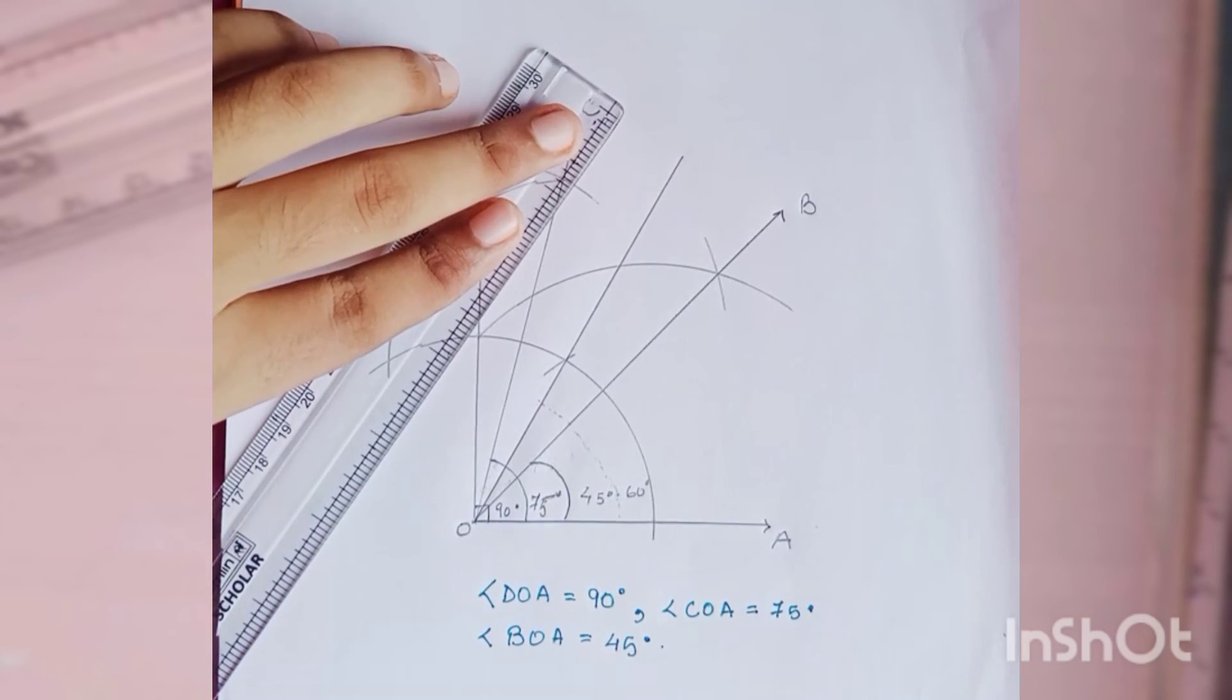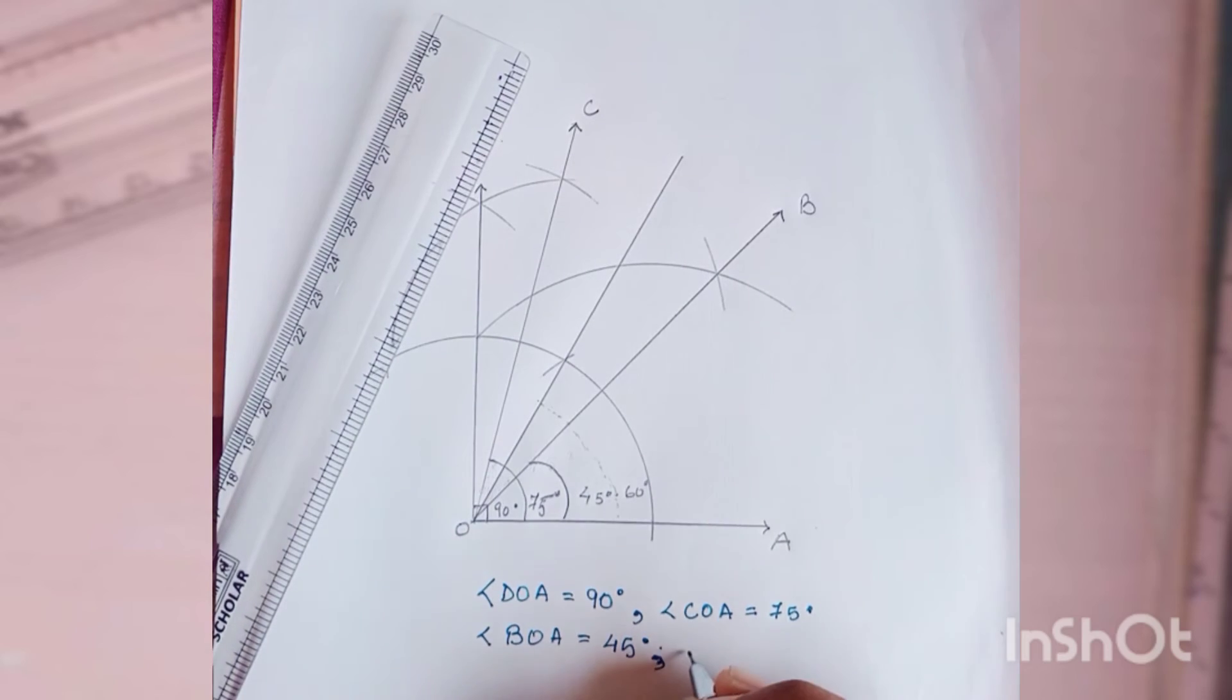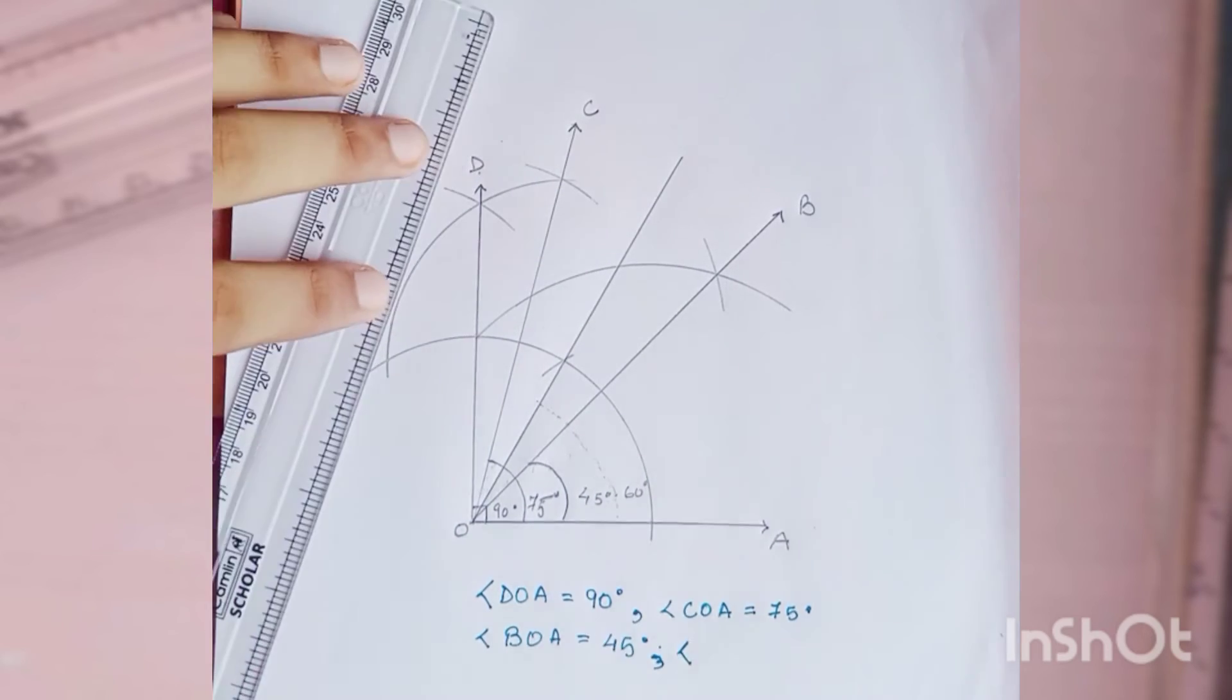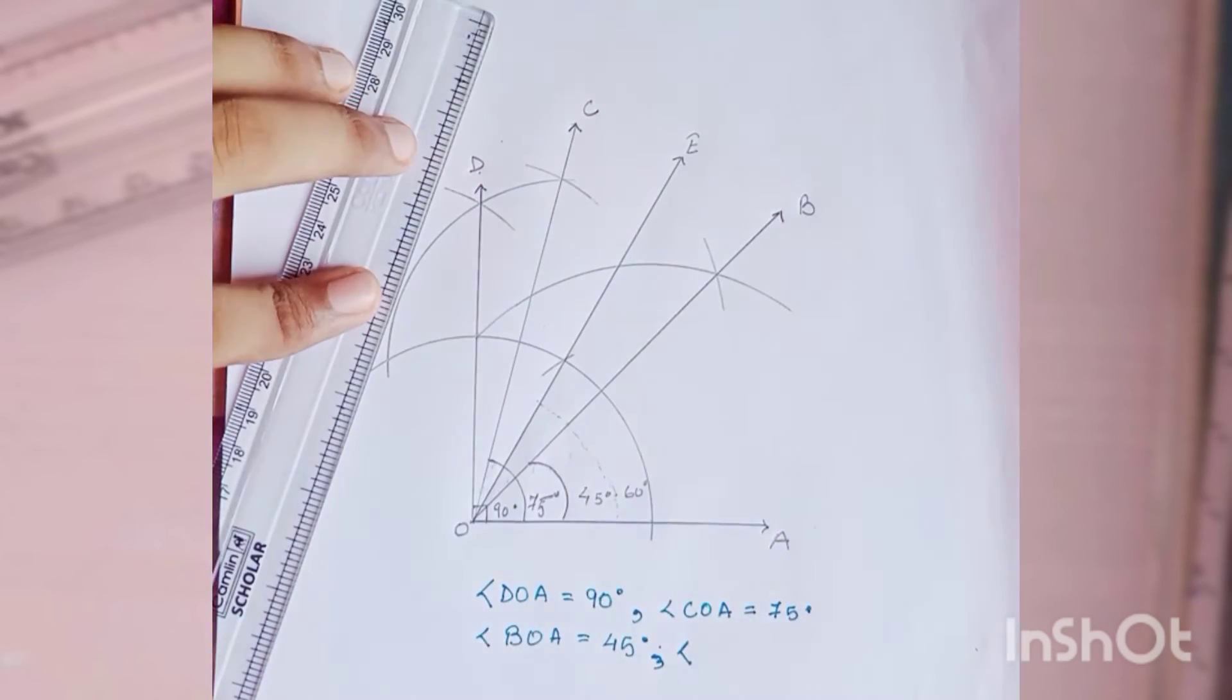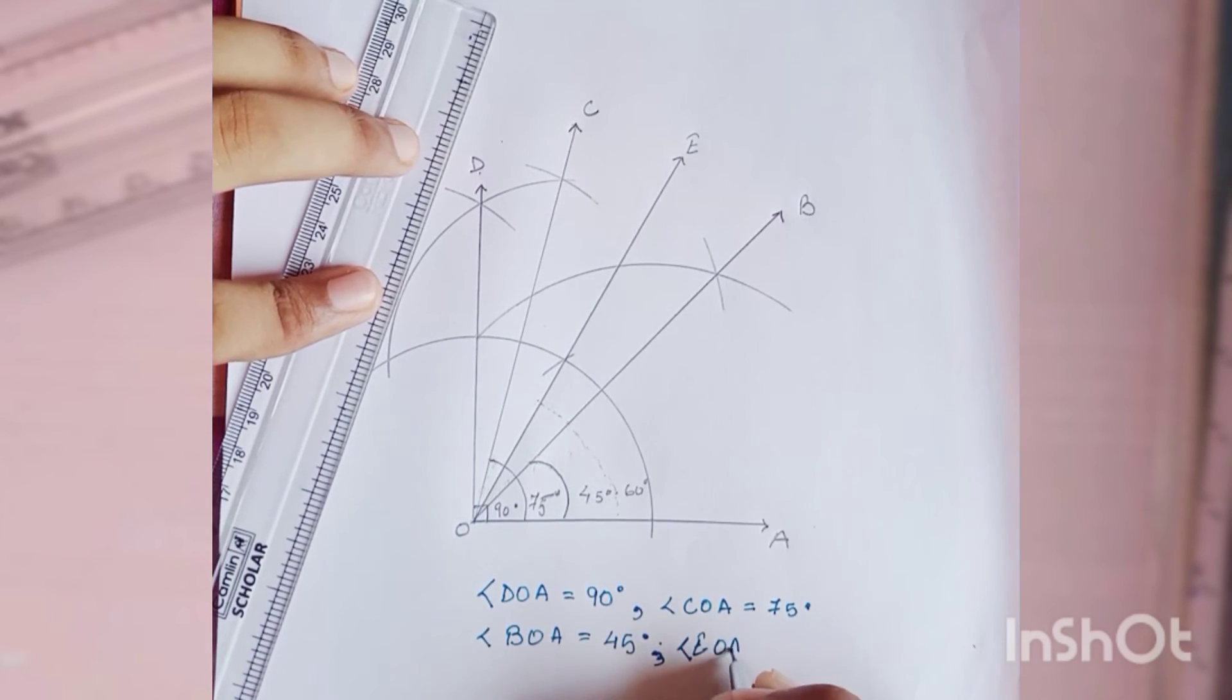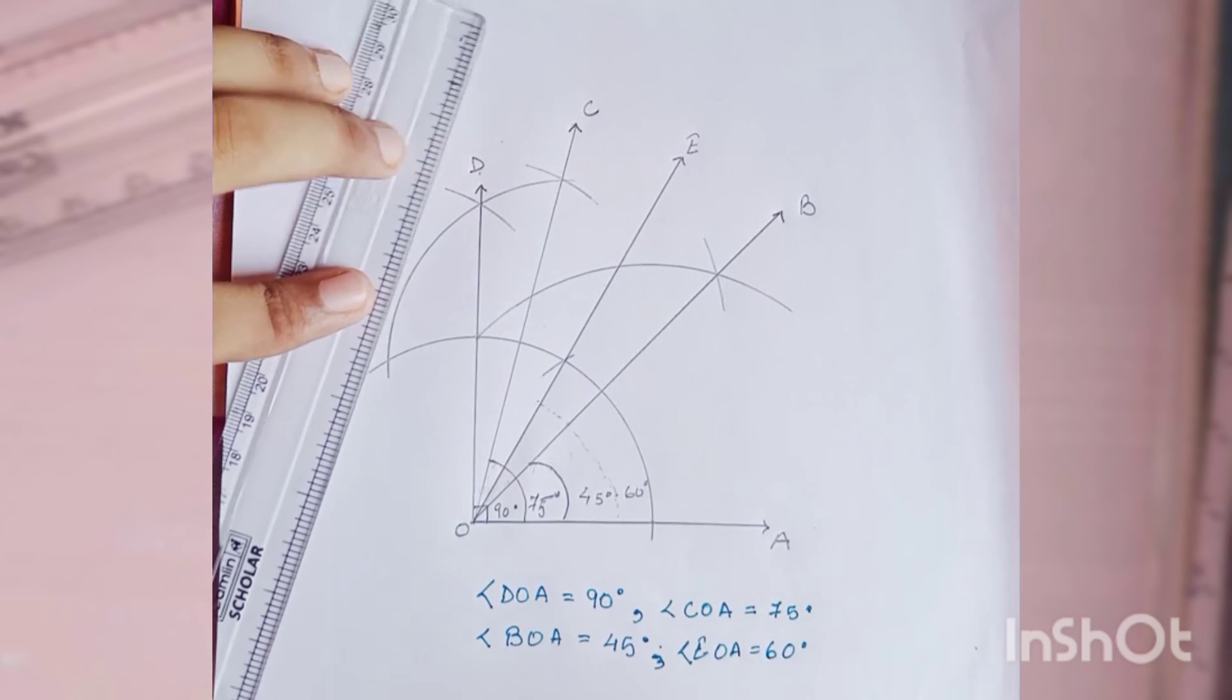this will become 60 degrees. So you can name this angle as E. Then angle EOA is equal to 60 degrees.